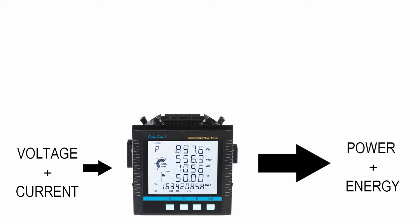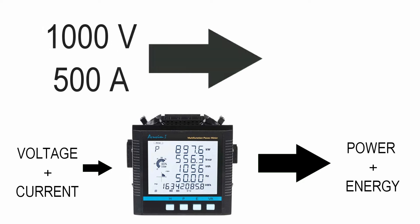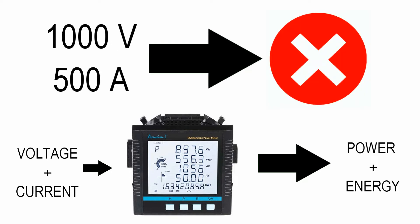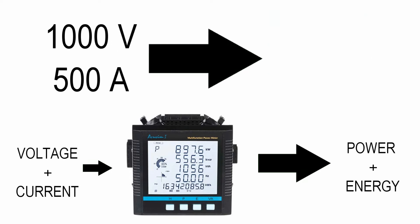However, for example, if you directly connect a thousand volts with 500 amps to the meter, it will burn out the meter. As a result, the voltage and current must be stepped down before you feed it into the meter. The devices for that are called potential transformers or PTs and current transformers or CTs.